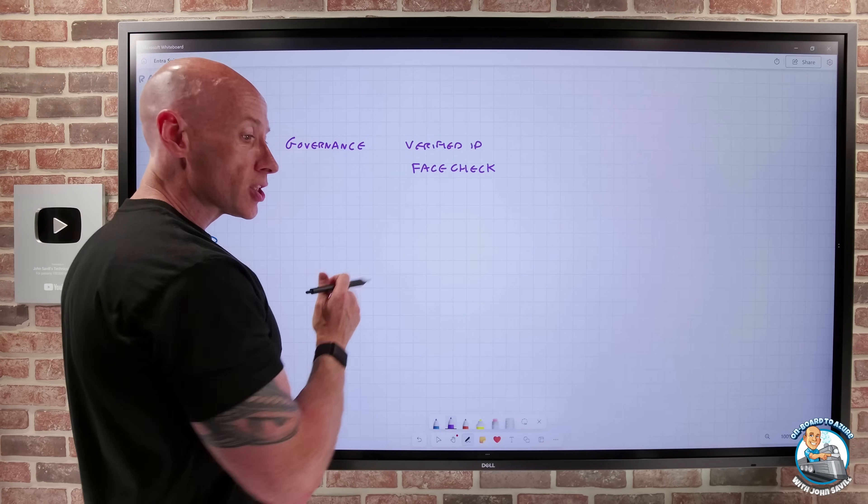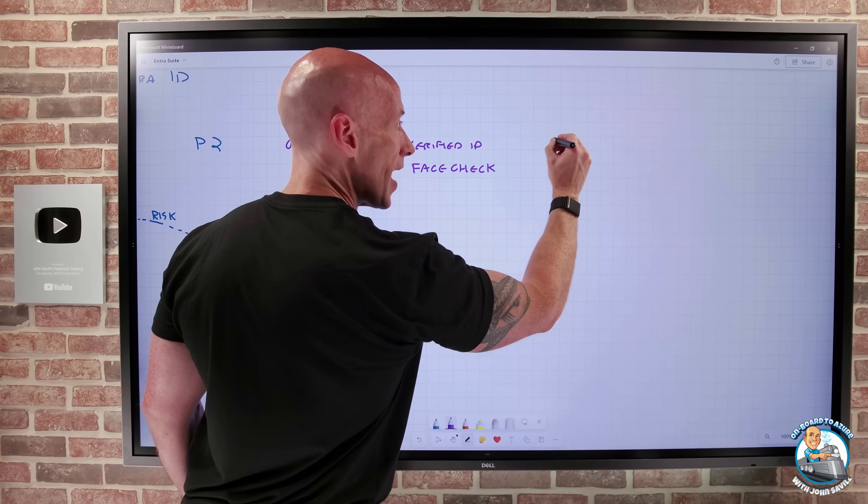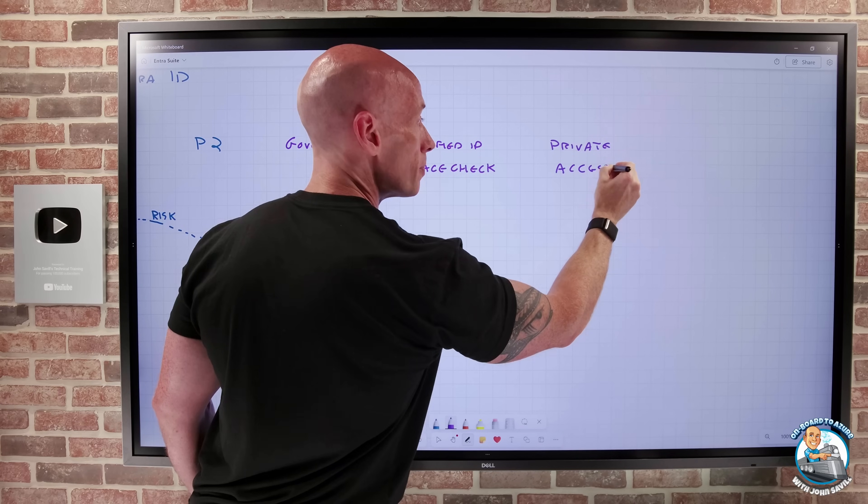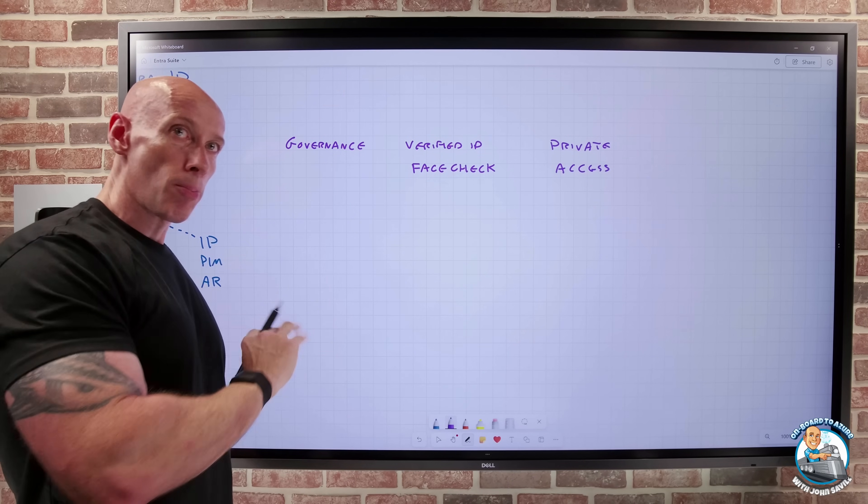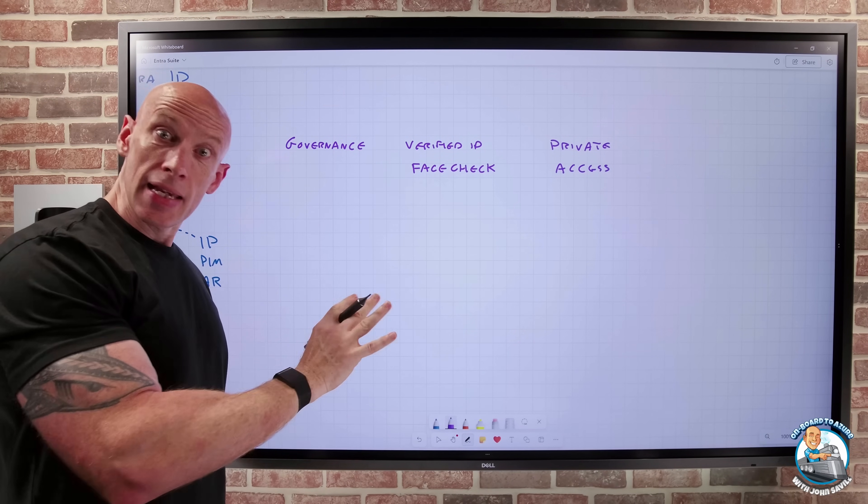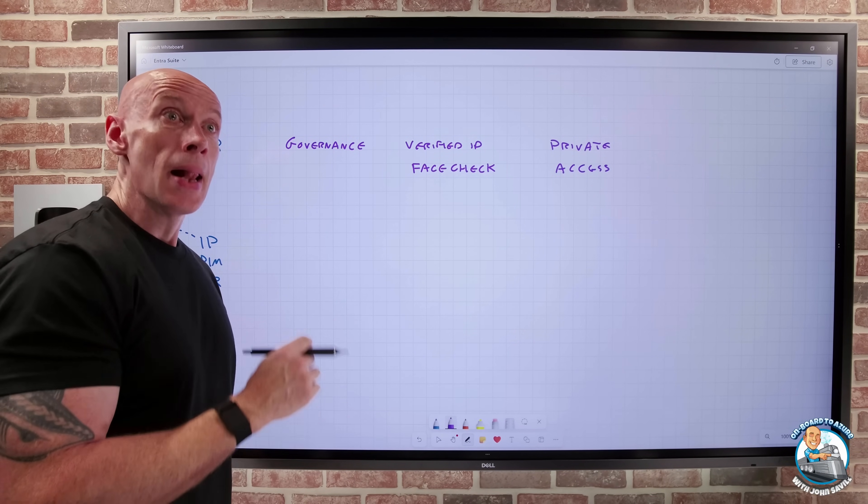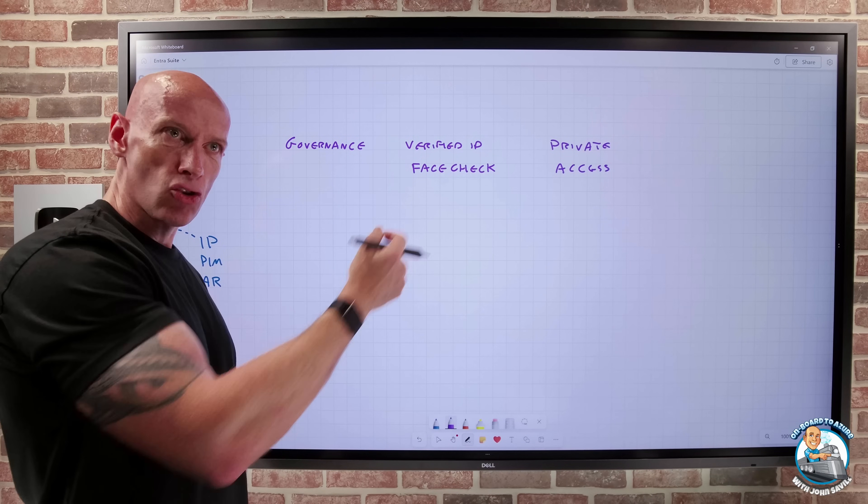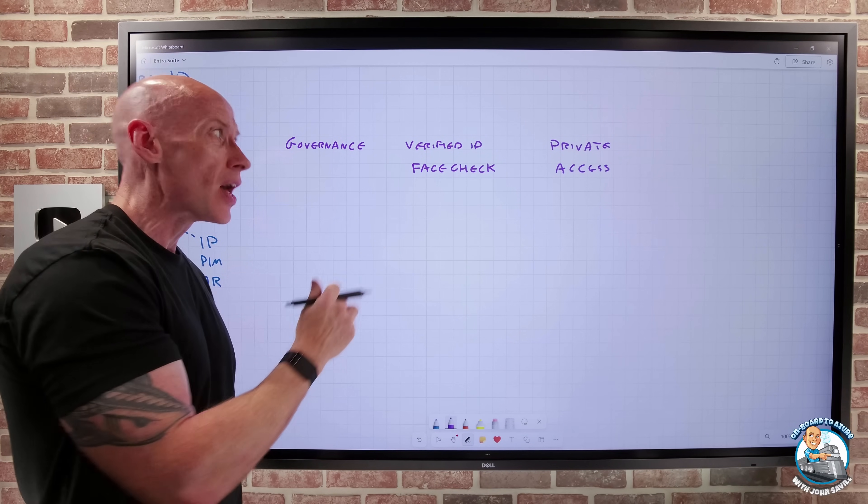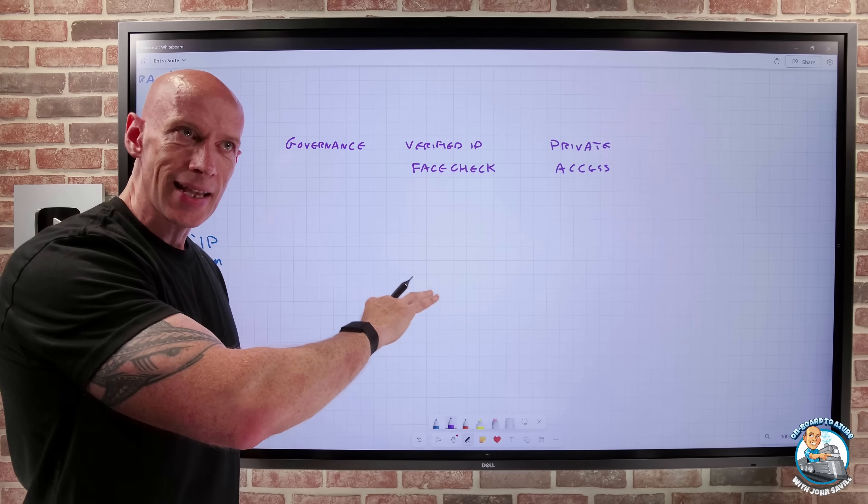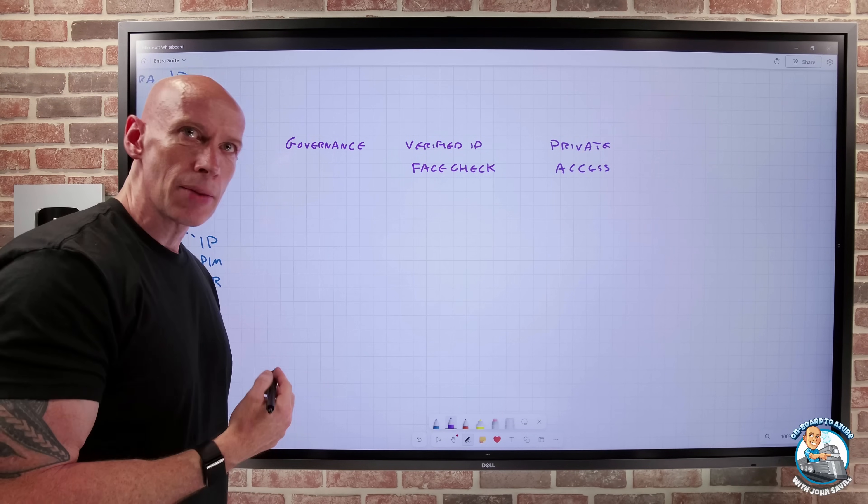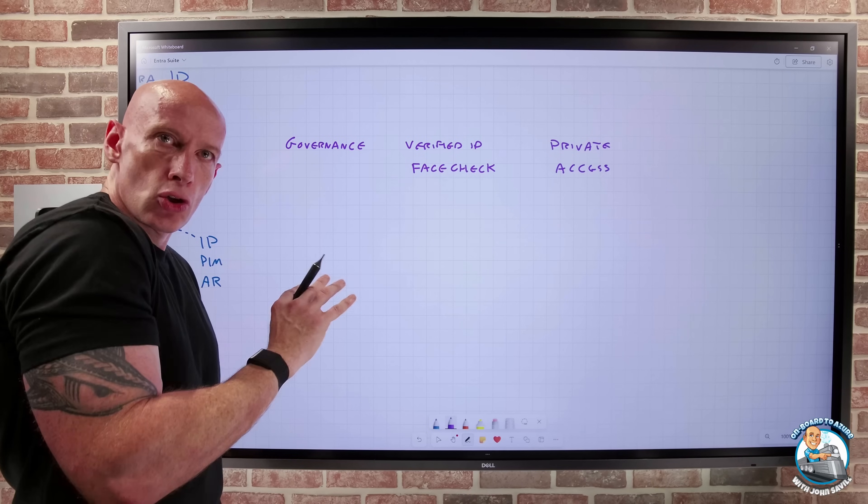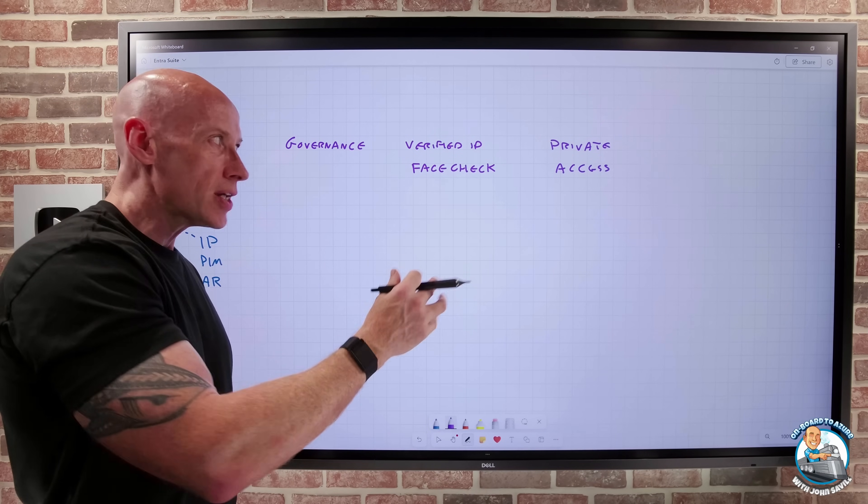And then we got into some of the newer features around private access. So private access enabled me to make available on private networks anything that's TCP or UDP through a connection to the ENTRA secure service edge from a global secure access client on the machine. I could apply conditional access to that. It was constantly validating the person and the health, again, through that conditional access. So that would give me access to non-internet-based resources.